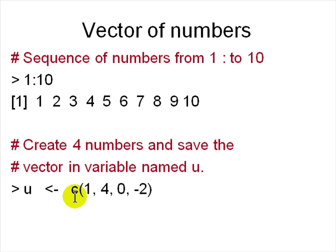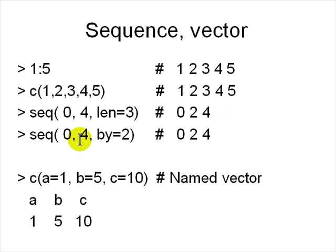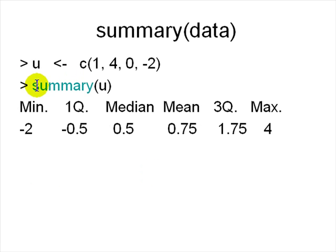You can create a vector using the c() function — for example 'c(1, 4, 0, -2)' assigned to u. To get 1 to 5 you can write 'c(1,2,3,4,5)' or use the 'seq()' function: seq(0, 4, length=3) gives three equally spaced numbers, or seq(0, 4, by=2) increments by 2 giving 0, 2, 4. You can even name elements: a=1, b=5, c=10 — that's a named vector.